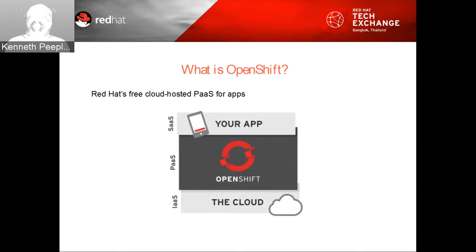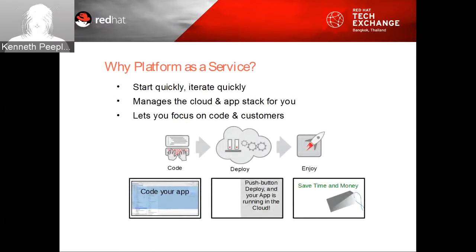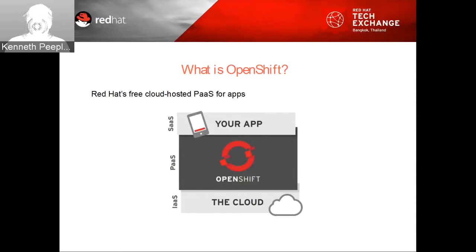OpenShift is Red Hat's platform as a service — PaaS — that gives us quick development, hosting, and scaling of applications in the cloud. OpenShift has three offerings: the online, on-premise, and open-source PaaS. They are OpenShift Online, OpenShift Enterprise, and OpenShift Origin. OpenShift is the PaaS layer. We're going to use OpenShift Online when we do some of the demo. The PaaS facilitates deployment of applications or services without the cost and complexity of buying and managing the underlying hardware, software, and provisioning hosting capabilities.